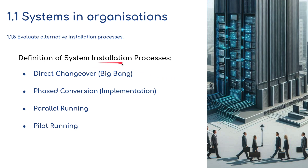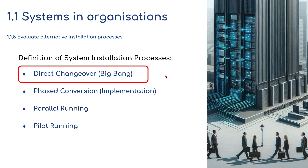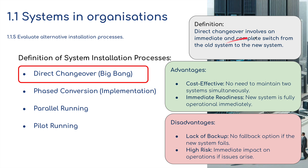Direct changeover involves an immediate and complete switch from the old system to a new system. It's cost effective — there's no need to maintain two systems simultaneously. The new system is fully operational immediately. However, there's no fallback option if the new system fails or there are problems, and there's a high risk of immediate impact on operations if issues arise.